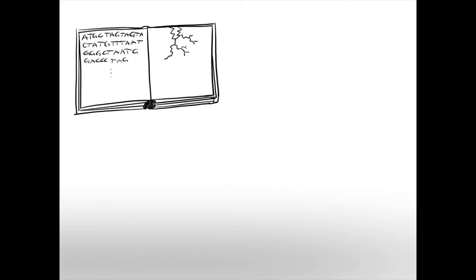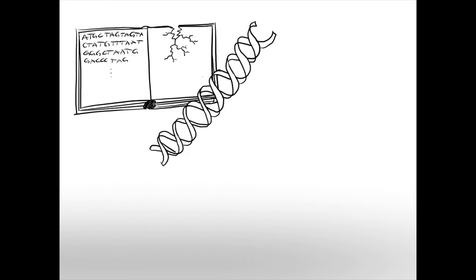We can further imagine that if a page is broken or damaged, these letters cannot be read anymore and the necessary information is lost. In this analogy, each page is a single gene, and we can imagine well that if a gene is damaged and its information lost, it can lead to devastating diseases.